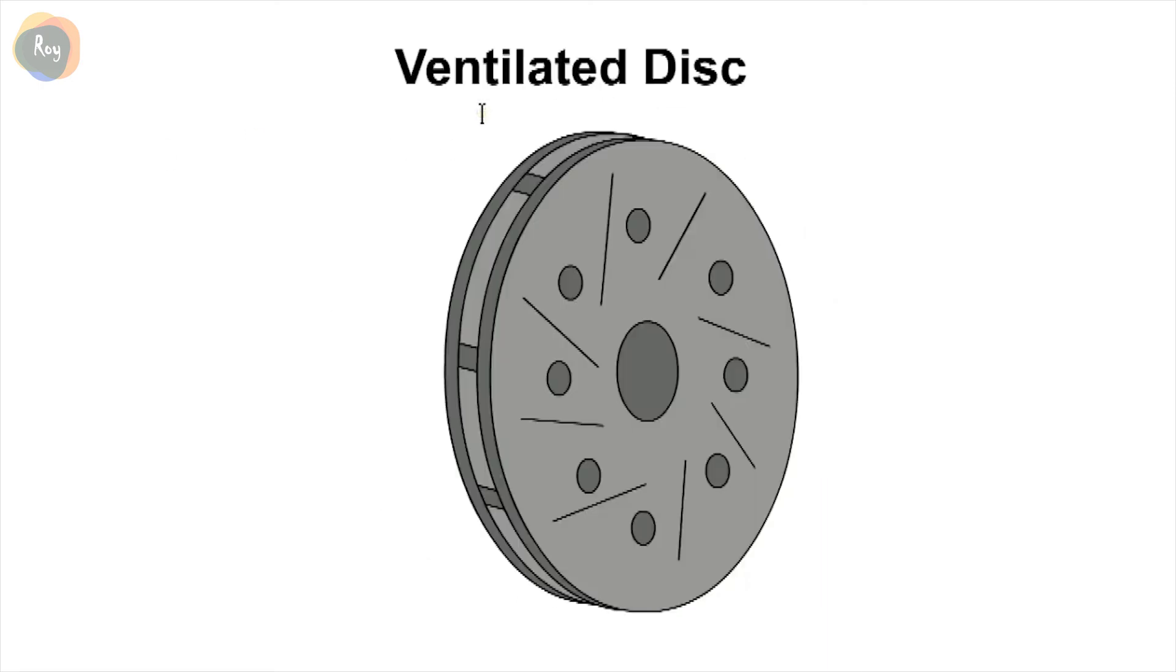To improve braking performance and avoid brake fade, ventilated brake discs are used. They consist of two discs separated by vanes or fins which allow air to circulate for cooling. Slots and holes also help to improve air circulation.